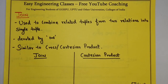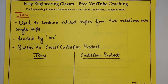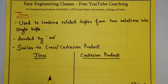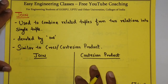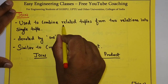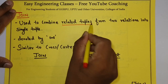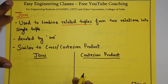Hello students, welcome to Easy Engineering Classes. Today we will see one of the most important topics in database management system, which is joins. Join is used to combine related tuples from two or more relations into a single tuple.